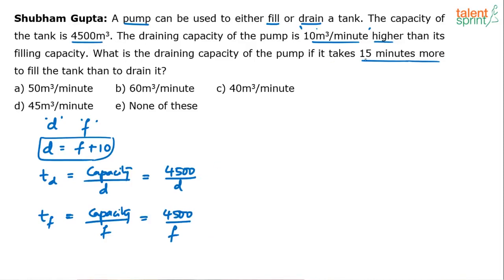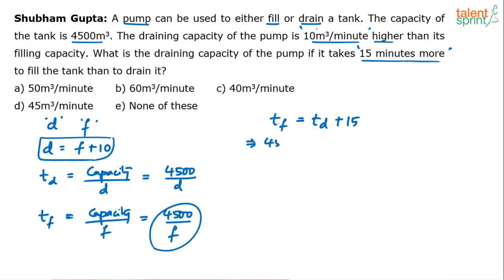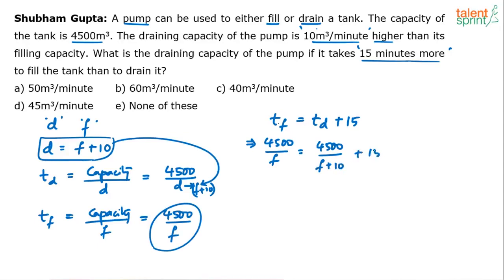The question says it takes 15 minutes more to fill the tank than to drain it, which means time taken to fill equals time taken to drain plus 15. So: 4500 by F equals 4500 by D plus 15. Since D equals F plus 10, we can replace D with F plus 10. So the equation becomes: 4500 by F equals 4500 by (F plus 10) plus 15.